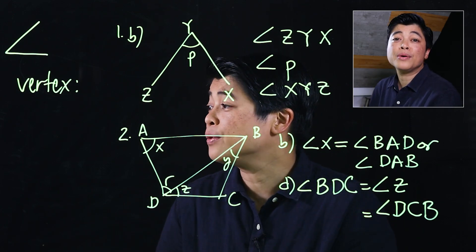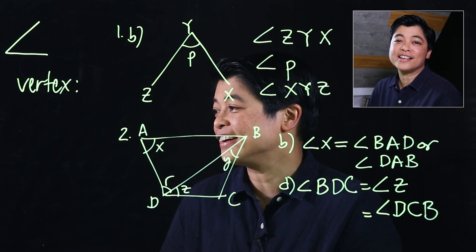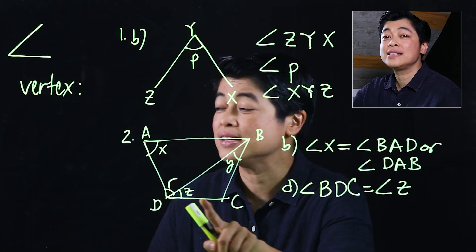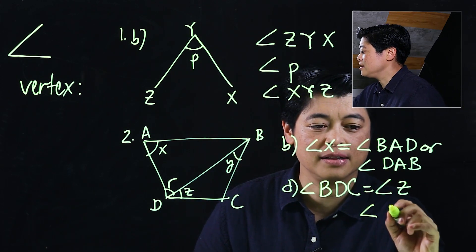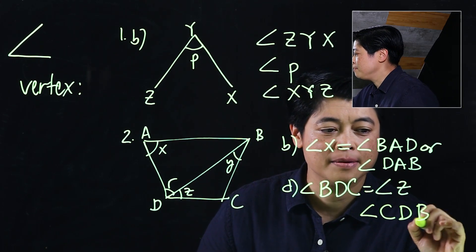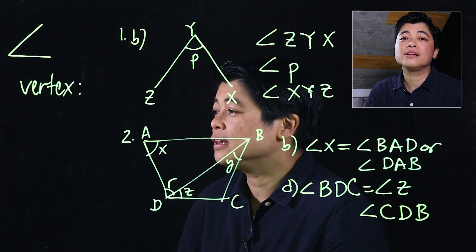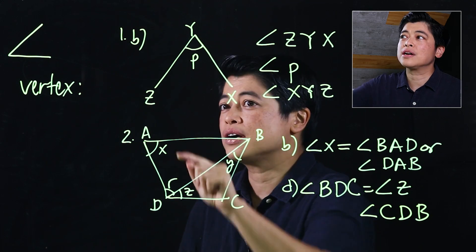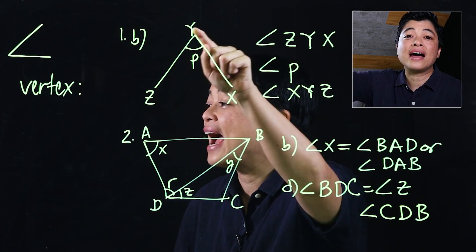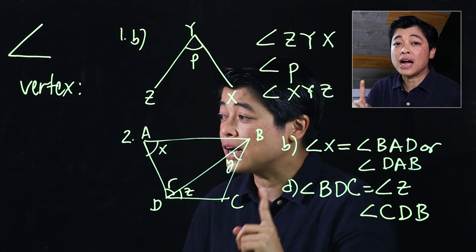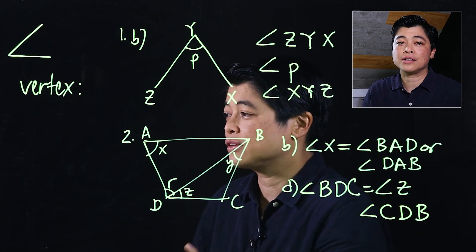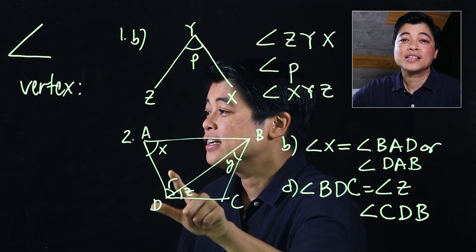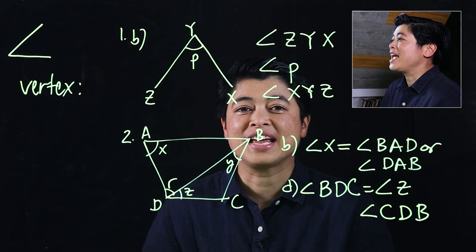Angle CDB — so each angle could be named differently. Usually when named with three letters, those are the endpoints of the angle. If named with a single letter, that's the label inside the angle. Shortly we will be doing measuring angles.